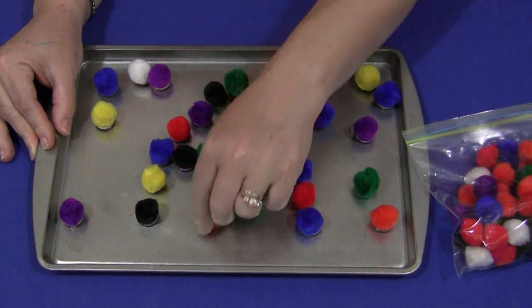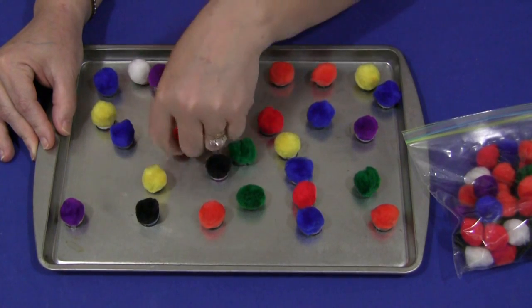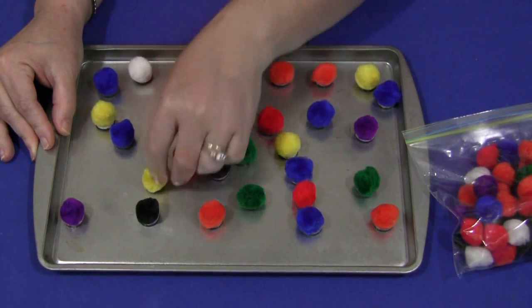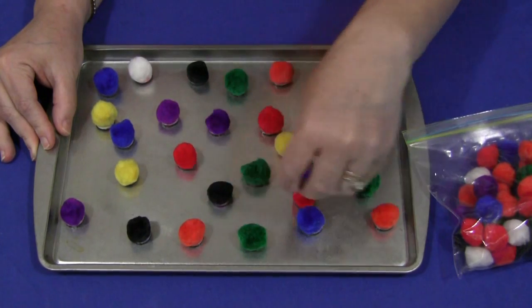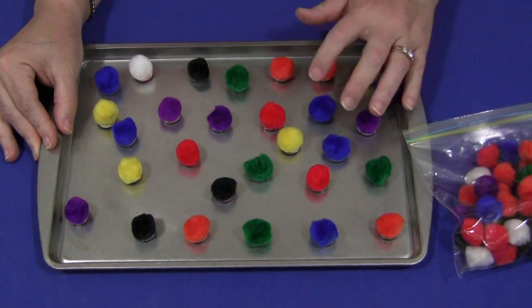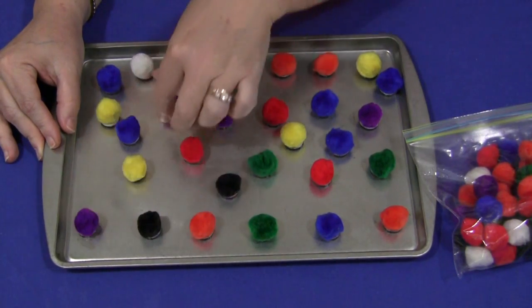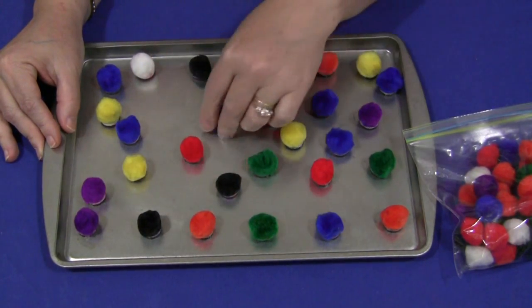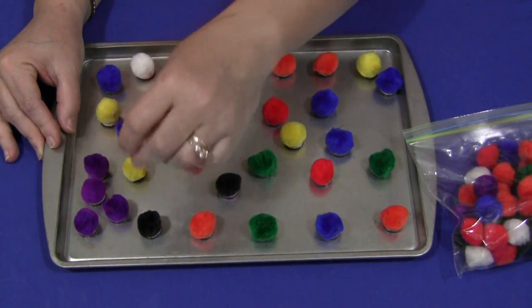Another thing we do is pom-pom color sorting. We have them all spread out on the tray just like that and then the child will sit down and move and put the groups of pom-poms together by color. So over here we'd have purple, they find another purple, find the other purple until they've got all the purples together. And then over here maybe they put the yellow and they go through.